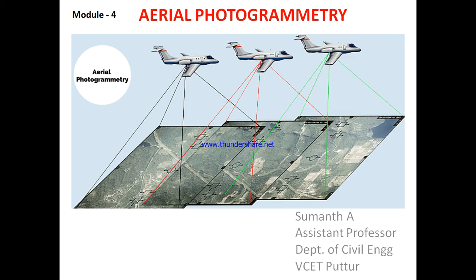Through aerial vehicles, we take photographs of the Earth's surface. Sometimes photographs are taken through air stations — through remote sensing activity — where satellites are used. Satellites have devices called sensors, scanners, or cameras, which take photos of the Earth's surface over a large aerial extent.